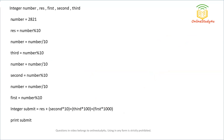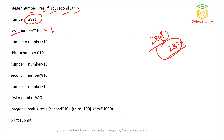Next question: we have integers number, res, first, second, third. Number is set to 2821. We compute res as number mod 10 — 2821 mod 10 gives remainder 1, so res equals 1. Then number is reduced by dividing by 10, giving 282. Next, third equals number mod 10 — 282 mod 10 equals 2, so third is 2. We reduce number again to 28. Then second equals 28 mod 10 which is 8.